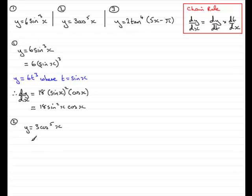In number 2, what we've got is y equals 3cos⁵x, which in other words is essentially 3 times (cos x)⁵. So I think of this as y equaling 3t⁵ where t is cos x. So if I was going to find dy/dx...